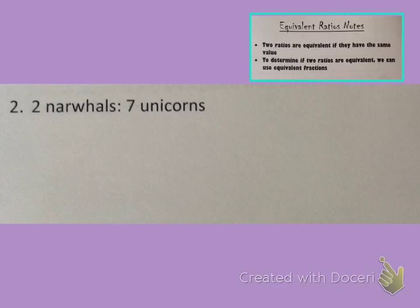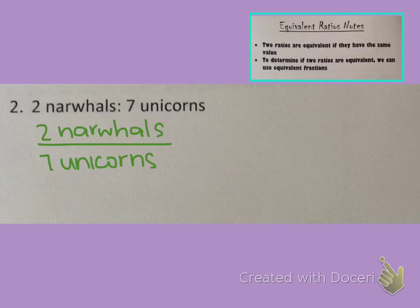Let's look at this next one, 2 narwhals to 7 unicorns. Again, we said we have to write it in fraction form, so let's do that. And then all we have to do is multiply or divide both the numerator and denominator by the same exact number. As I'm looking, I see 2 and 7, and there's not anything that goes evenly into both 2 and 7, so multiplication is going to be our best bet.